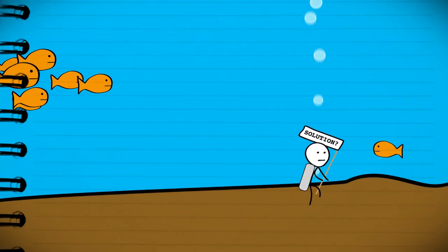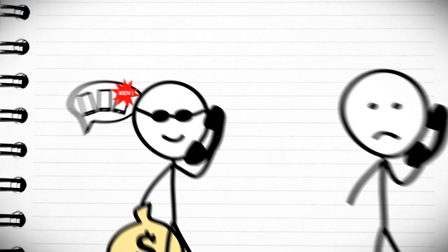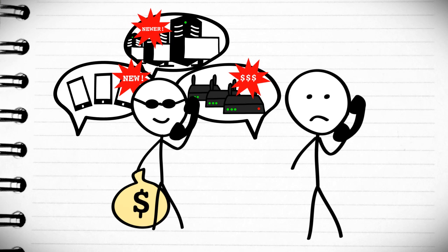So Dave looked high and low for a solution that could make his life easier. He talked with companies who wanted him to spend thousands on new phones, big computers, and dedicated internet connections.